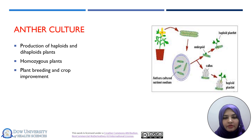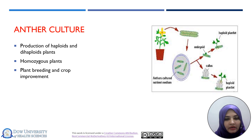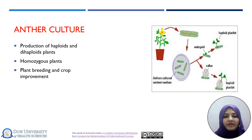Anther culture is also a type of technique used in the in vitro propagation method. This is used for the production of haploid plants, and after doubling, dihaploid plants. For producing homozygous types of plants, an advanced variety level can be achieved. For plant breeding and crop improvement, this type of culture technique can be used. It is not a very common type of technique, but very useful for the production of haploid plants.